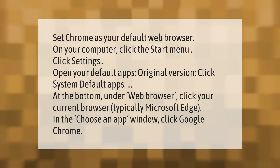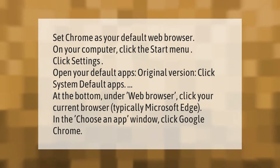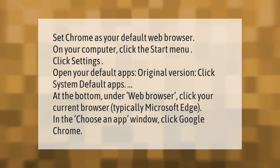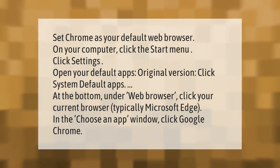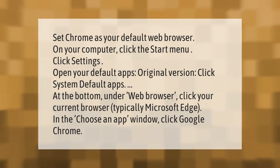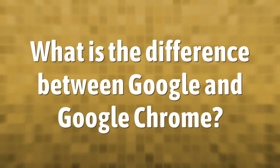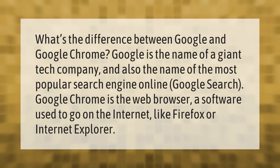To set Chrome as your default web browser on your computer, click the Start menu, click Settings, and open your Default Apps. Click System Default Apps. At the bottom, under Web Browser, click your current browser — typically Microsoft Edge. In the 'Choose an App' window, click Google Chrome.